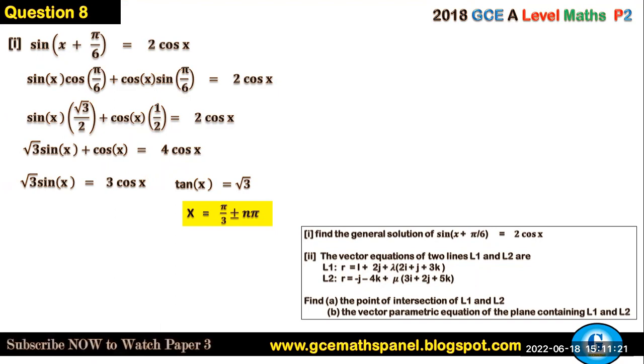So this is the general solution where n is an element of the set of integers. Now the second part of the equation reads: the vector equations of two lines L1 and L2 are such that L1 is that and L2 is that. Find (a) the point of intersection of the lines L1 and L2.